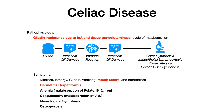For celiac specifically, watch for mouth ulcers, dermatitis herpetiformis — covered in the coming slides — anemia due to malabsorption of folate, B12, and iron, coagulopathy due to malabsorption of vitamin K, neurological symptoms, and osteoporosis. If you're on your exam and you see any of these bolded findings in a vignette with vague GI symptoms, chances are the test writer is pointing toward celiac disease, perhaps asking about pathophysiology, showing an image of dermatitis herpetiformis, or mouth ulcers, and asking you for the diagnosis.